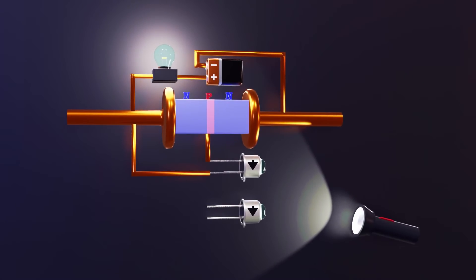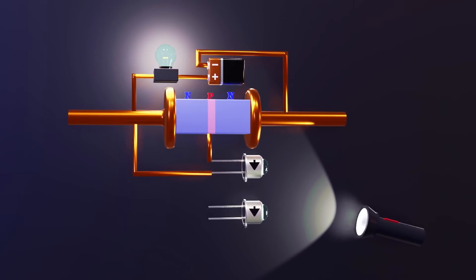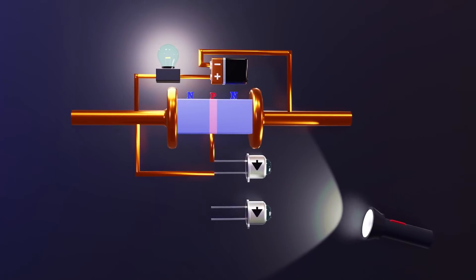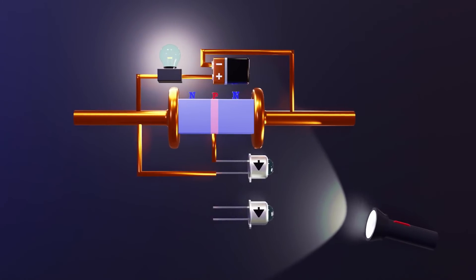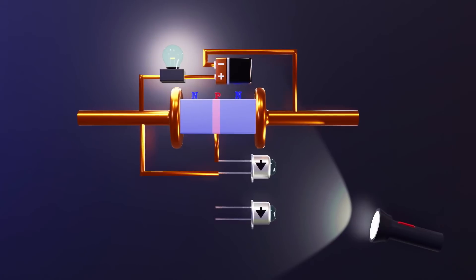If we analyze the photo transistor and the photo diode, we will realize that they do the same, the light comes to them and they let current through. But the reason a photo diode is not used directly is that the current that lets pass is so low that an amplifier is required to get useful results.